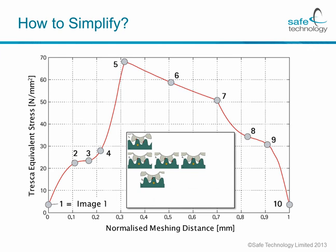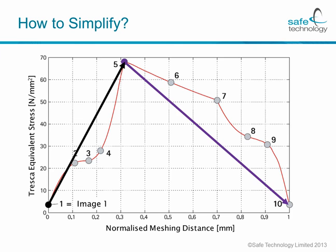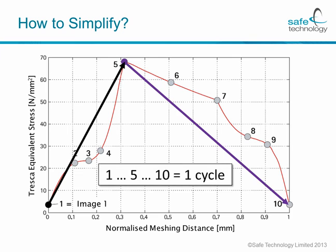We will travel along the highlighted points 2, 3, 4 and finally arrive at position 5 where the stress is at its maximum. After that point the stress will continue to decrease until the tooth goes completely out of contact. In terms of fatigue, this effectively means we are looking at a stress history going from point 1 to point 5 and then from point 5 back down to point 10, thus rendering our fatigue cycle between points 1, 5 and 10.